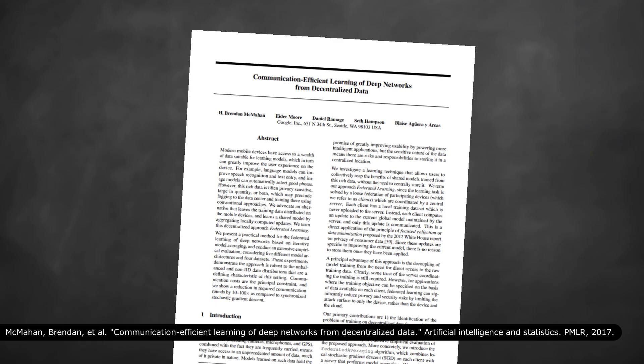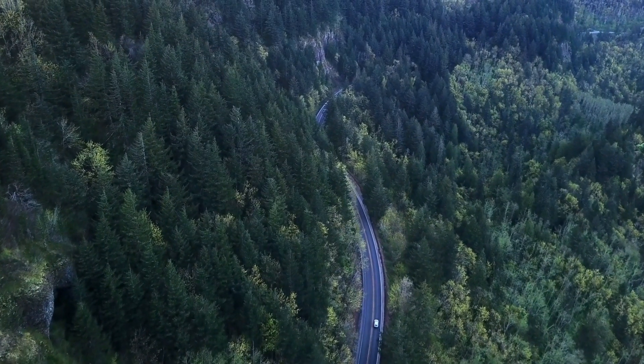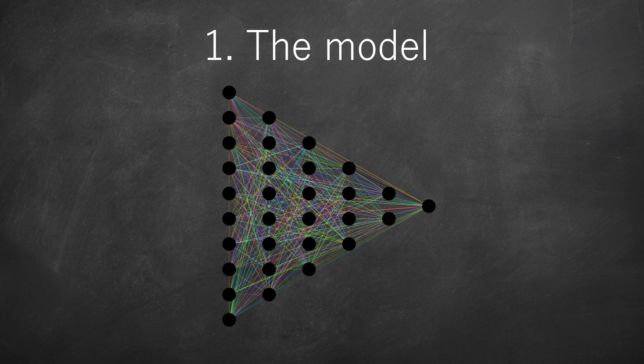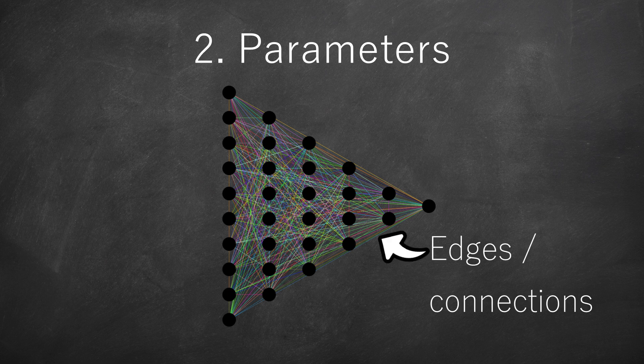When we talk about federated learning, we are most often referring to its initial version designed in 2017 by Google researchers. Before going further, we must understand two key concepts of deep learning. The first is the learning model — in a popular sense, it corresponds to the shape of the neural network which we train on data, defining the number of neurons and how they are connected. The second concept is that of parameters: decimal values representing the strength of the connection between two neurons. The set of parameters of a model at a time t corresponds to a snapshot of the learning carried out by the model.